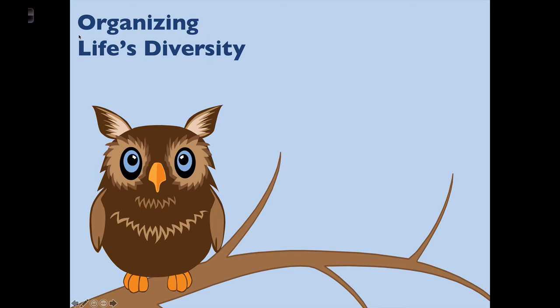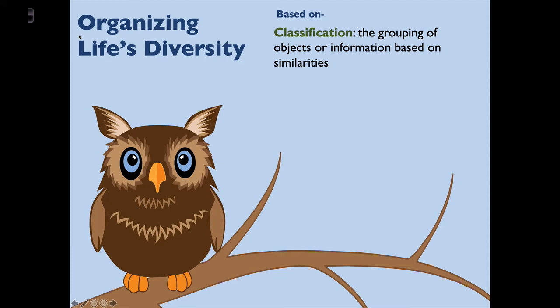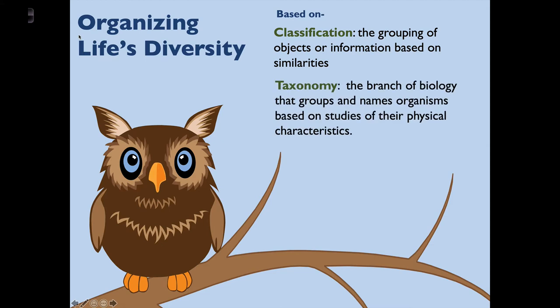Using the example from the last slide, what we want to be able to do in biology is organize life's diversity. There is an incredible amount of diversity on planet Earth, and we want to be able to put organisms into groups so we understand them better. This is based on the idea of classification — the grouping of objects or information based on similarities. We call this discipline taxonomy, the branch of biology that groups and names organisms based on studies of their physical characteristics. The word taxonomy comes from Latin: 'taxa' means to arrange, and 'nami' means to order knowledge — so ultimately we're trying to arrange ordered knowledge about groups of animals.